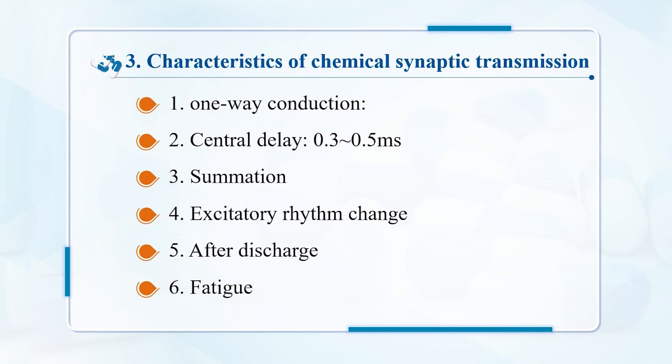The fifth characteristic is sensitivity to internal and external environment changes. Hypoxia, rise and fall of pH, and changes in ion concentration can change the transmission capability of synapses. Hypoxia can make neurons and synapses lose excitability, cause conduction disorder, and even neural death. Synapses are also sensitive to certain chemical substances and fatigue.